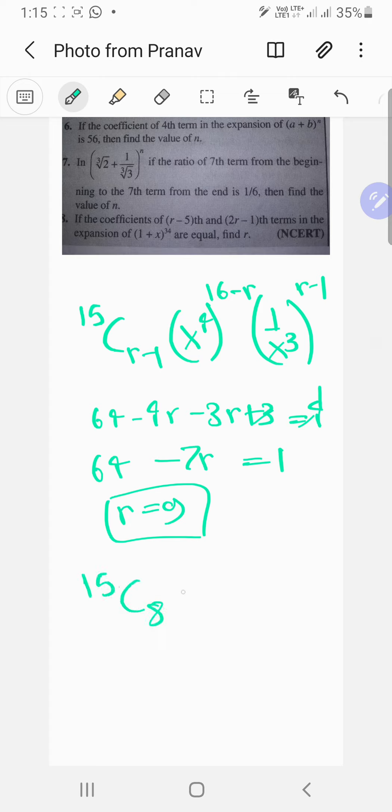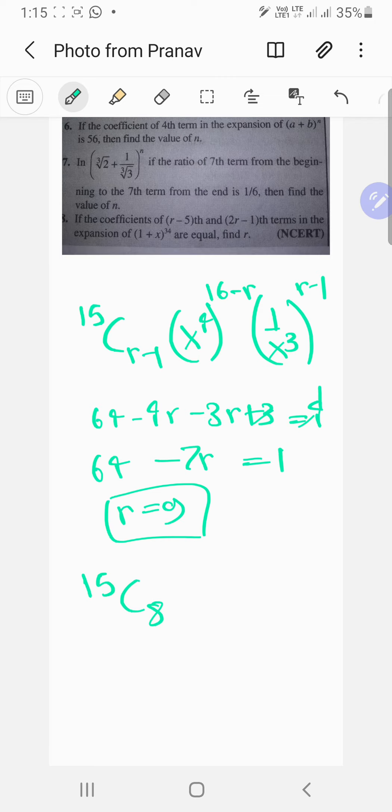Right, r equals 9 should work. So let's just calculate it. It's gonna be 15 choose 8, then you got (x^4) raised to the 5th power I think, and then 1 upon x^3 raised to the 8th power. Wait, no, x^4 raised to the 8th power and then 1 upon x^3 raised to the 8th power. I think that should be correct.